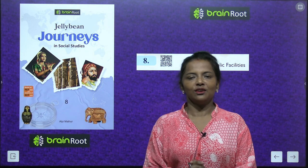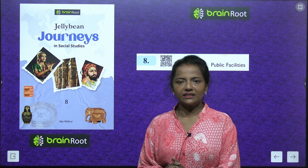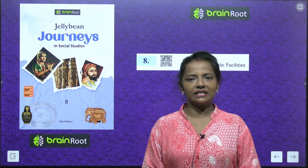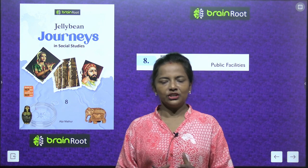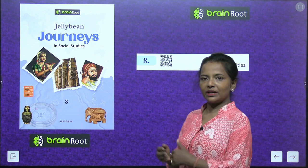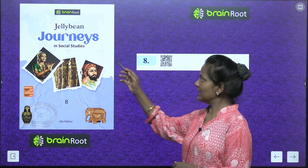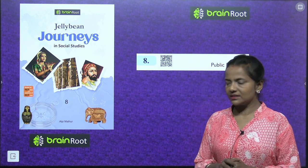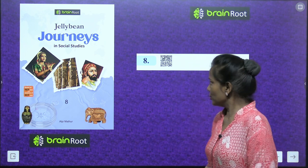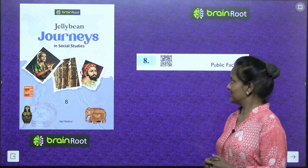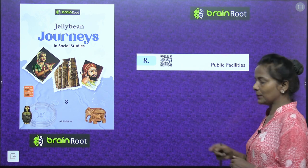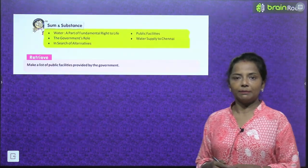Hello dear genius brains, a very warm welcome to your social studies class. This is your learning buddy Abrajita with a new chapter of civics. The book we are going to do is Jellybean Journeys in Social Studies Class 8 by Brain Root series. We start Chapter Number 8 here: Public Facilities. Today we learn about public facilities.